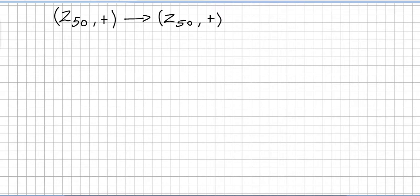This video answers the question: describe three different group isomorphisms from Z50 under addition into Z50 under addition.